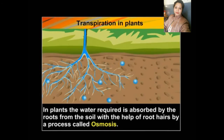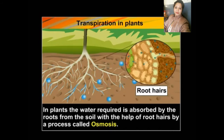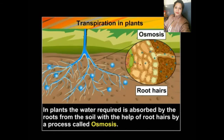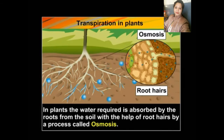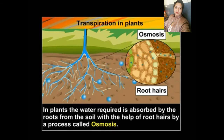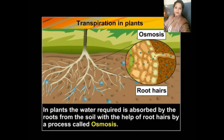In plants, the water required is absorbed by the roots from the soil with the help of root hairs, by a process called osmosis. Whatever water is needed by the plant is absorbed from the soil through root hairs. This process is called osmosis.